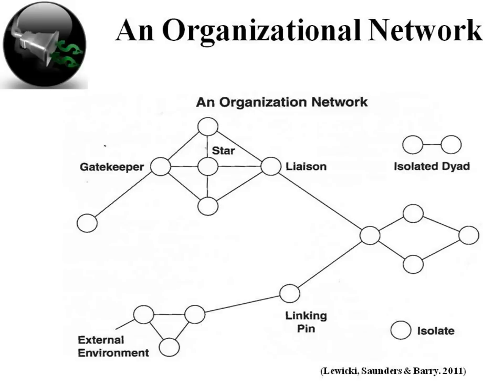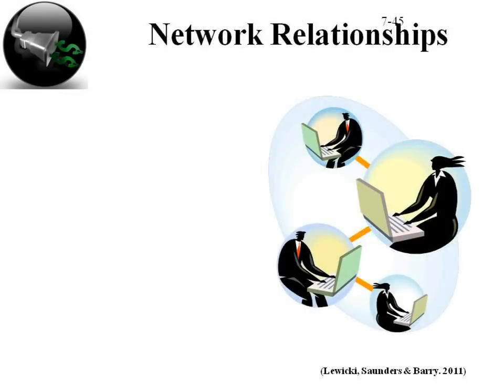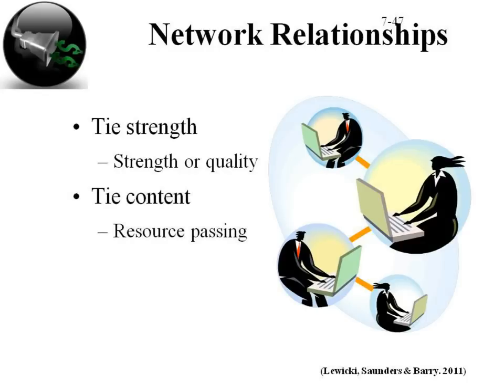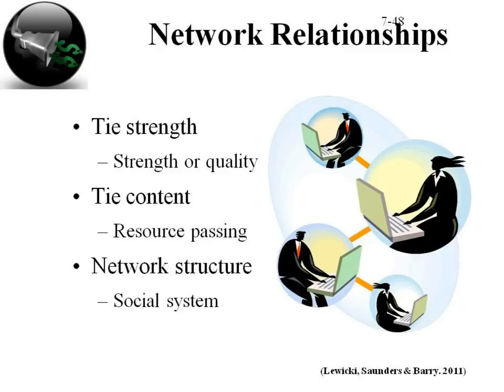Coalition: it's entirely possible that we may belong to one or more subgroups, as in a holacracy. Within network relationships, tie strength is an indication of the quality of relationships with others, tie content is the resource that passes along the tie, and the network structure is the overall set of relationships within a social system. Key concepts include centrality, criticality and relevance, flexibility, visibility, and coalition.